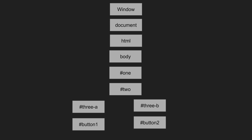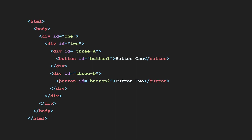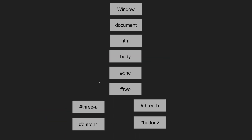When you click on a button in an HTML element, the DOM has to capture where that button is located. It starts from the root of the document — the window — and traverses downward: window → document → html → body → div#1 → div#2 → div#3a → button one. This traversal to find the element is called the capturing phase.